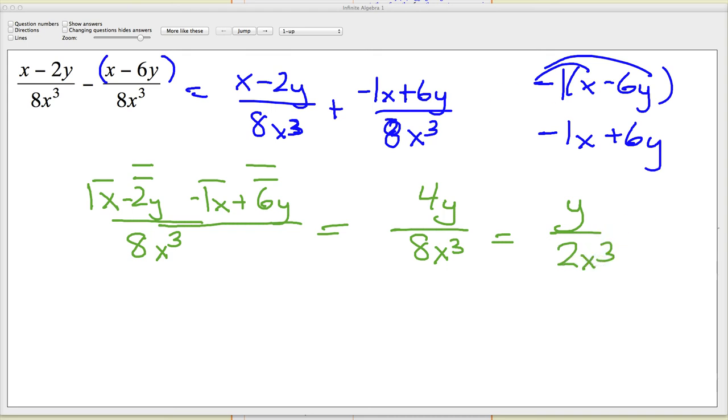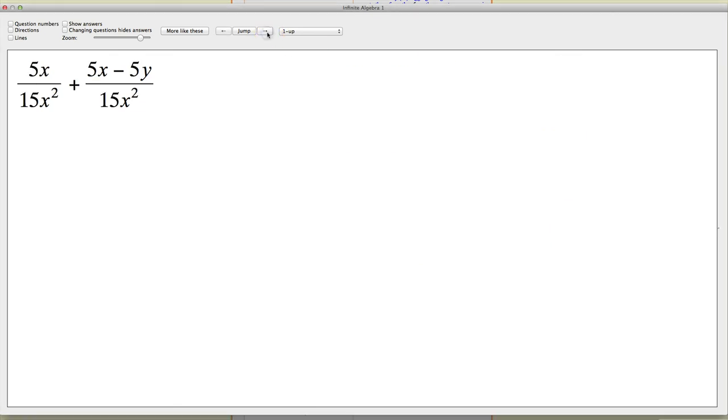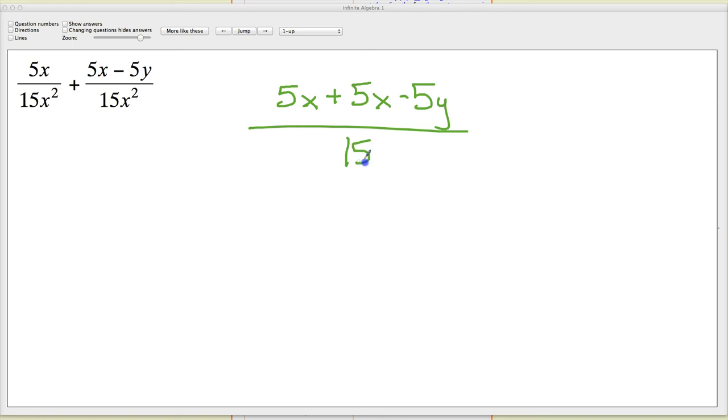So for another one, in this case, I've got my common denominator. Things are going great. So I'm just going to go ahead and write the numerator out. It's an addition question. It's not subtraction. So I don't have to worry about that. Combining like terms on top. Five x and five x would be ten x. Five y minus five y.